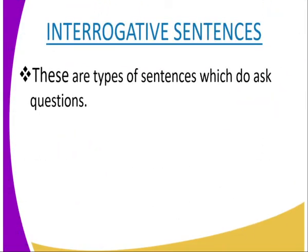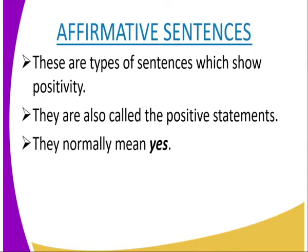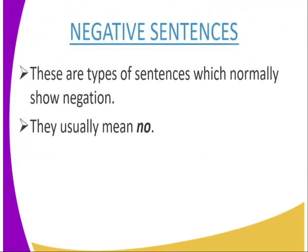You can look at the different types of sentences. We have interrogative sentences — from the word interrogate — these are the type of sentences which ask questions. Next are affirmative sentences — from the word affirm — these show positivity and are called positive statements, meaning a yes. Then we have negative sentences, which show negation, or usually mean a no.